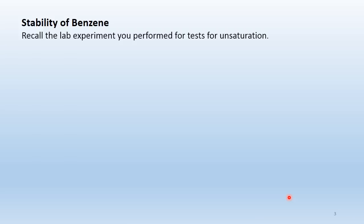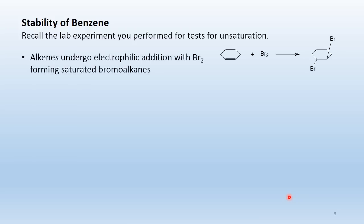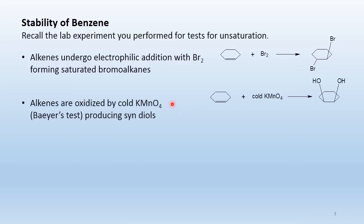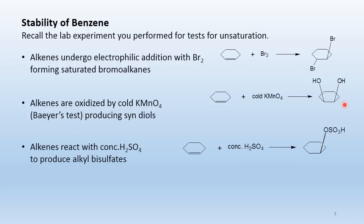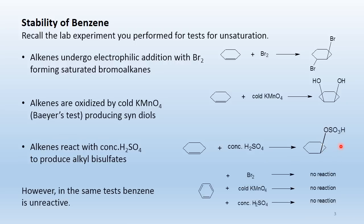Let's look at the stability of benzene by recalling tests for unsaturation. Alkenes undergo electrophilic addition with bromine forming saturated bromoalkanes — a rapid reaction. Alkenes are oxidized by cold permanganate (Baeyer's test) and react with concentrated sulfuric acid. However, the same tests carried out on benzene show no reaction — bromination, oxidation with cold permanganate, and concentrated sulfuric acid all fail.